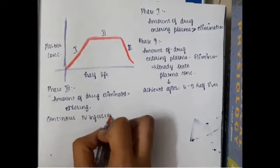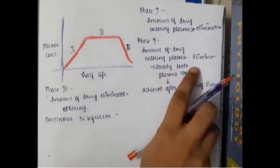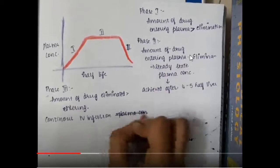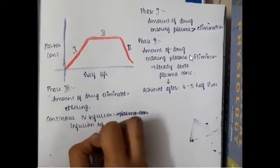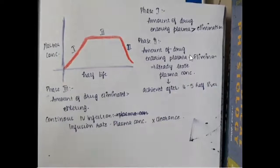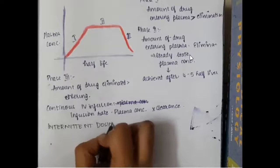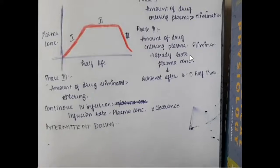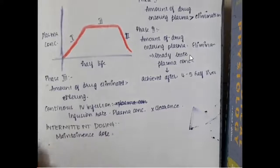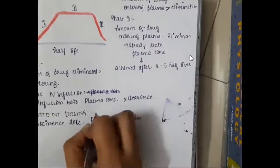For continuous IV infusion, to keep the drug at steady state, the continuous infusion rate should be equal to plasma concentration multiplied by clearance, accounting for the amount of drug eliminated. For intermittent dosing, that is the maintenance dose.